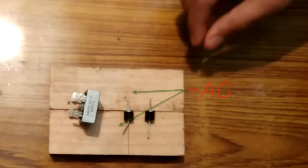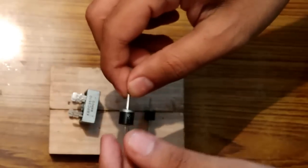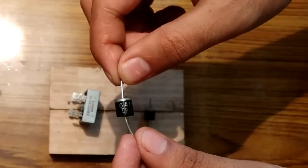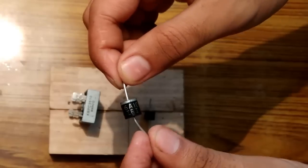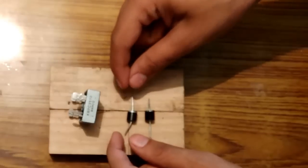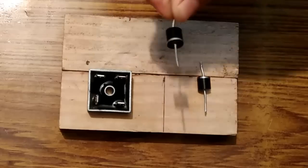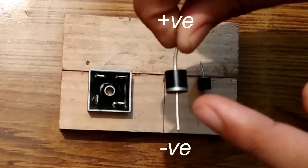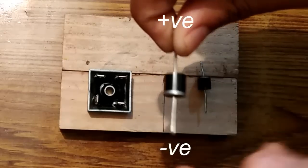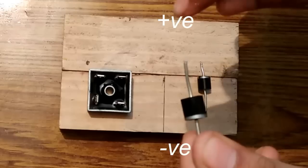And the other thing that you need are two high ampere diodes. I am using six ampere diodes and I have to use two of them to convert this single phase into a three phase. In a diode the silver side indicates the negative side and the black side indicates the positive side.